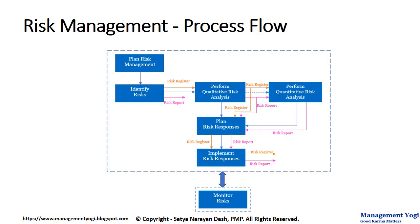This is the risk management process flow in a diagrammatic way. Our first process is Plan Risk Management, and the output of this process is, of course, the risk management plan. This risk management plan will then act as an input to the Identify Risk process.